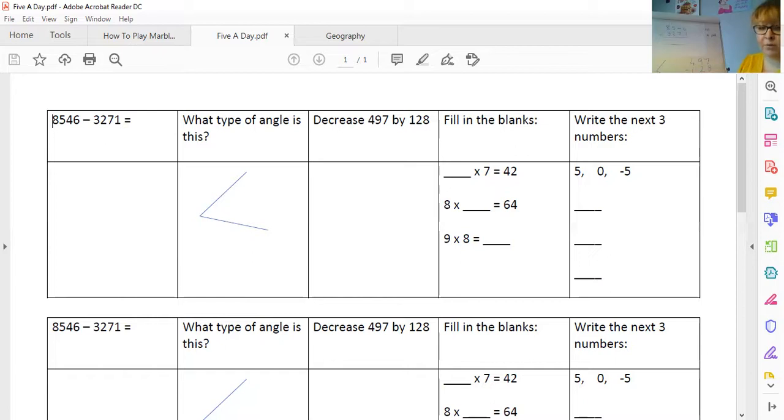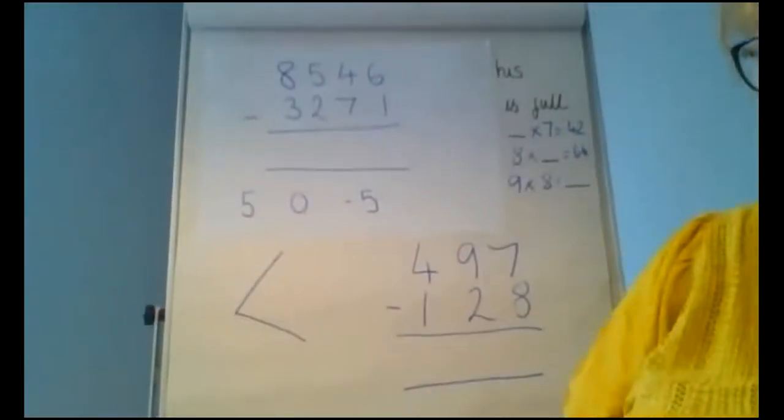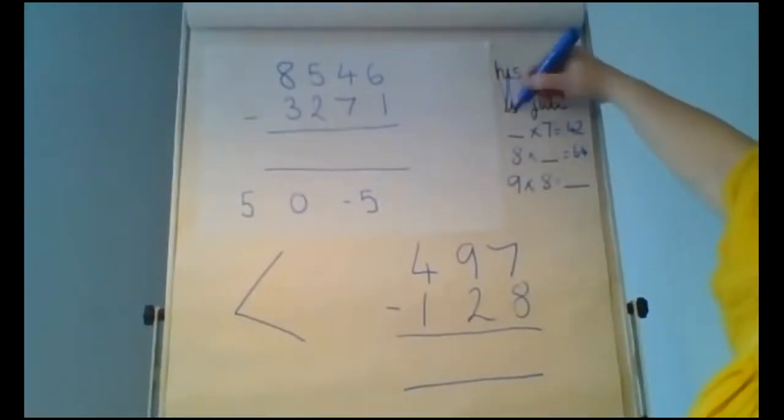We've got another one about filling in the blanks. So something times 7 equals 42. 8 times something equals 64. And 9 times 8 equals something. And then the next three numbers. So we've got five, zero, minus five. So I'm going to stop sharing my screen now. And we will have a look over at the whiteboard.